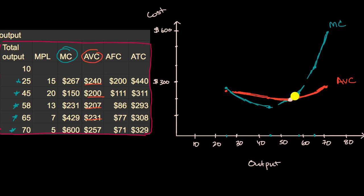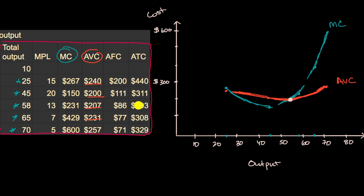We can do the same thing with average total cost. The curves will cross a little later because average total cost is higher, factoring in fixed costs. While marginal cost is lower than average total cost, each incremental unit brings down the average total cost — but as soon as marginal cost crosses average total cost, it starts bringing the average up. Let's graph average total cost in yellow.